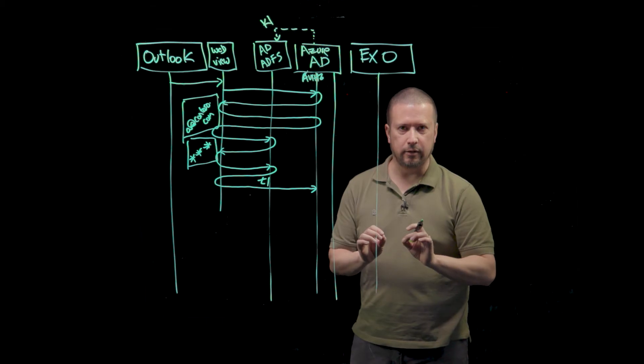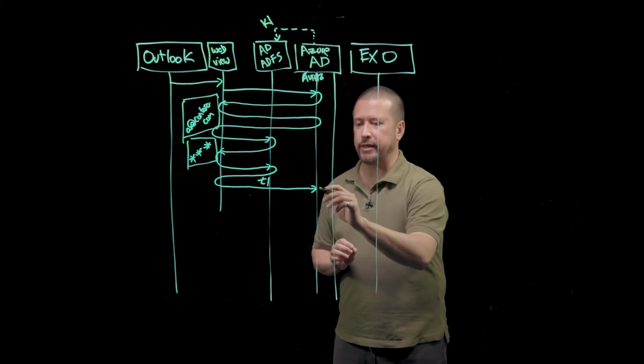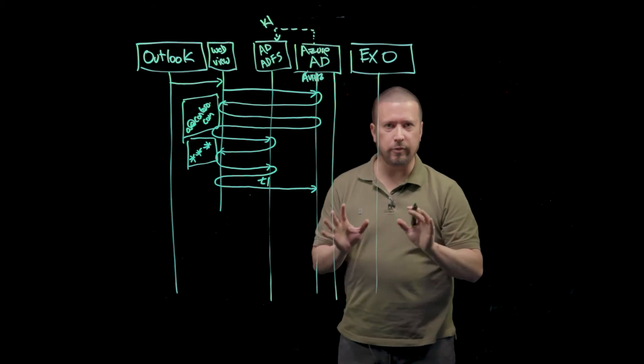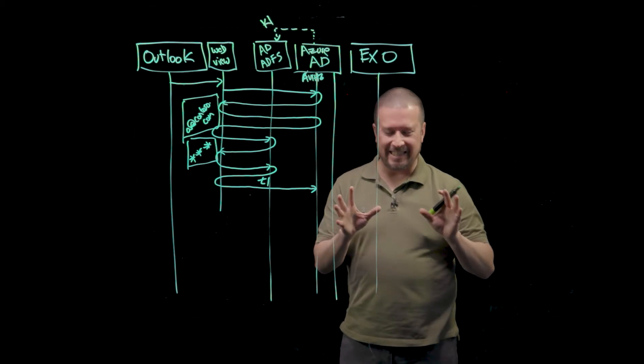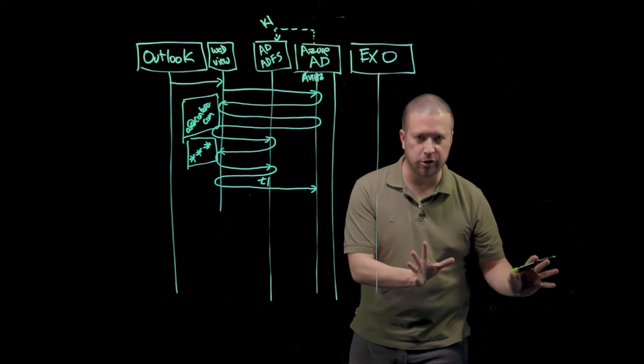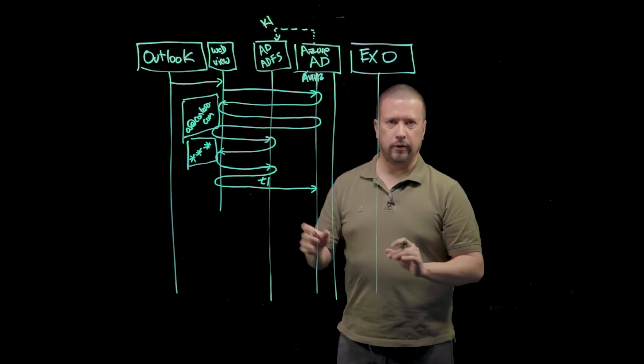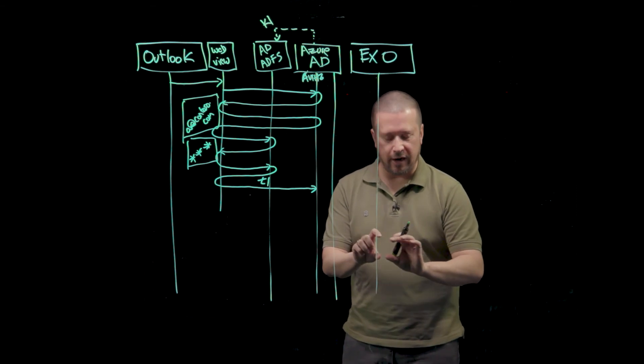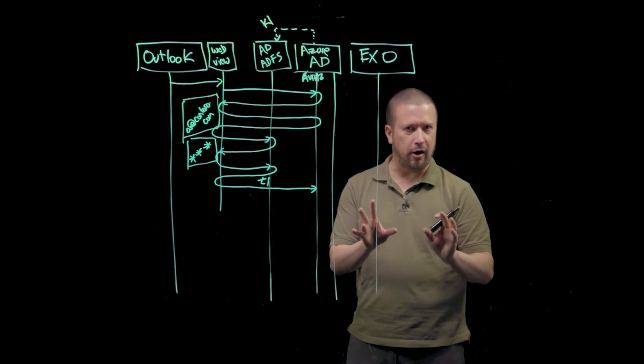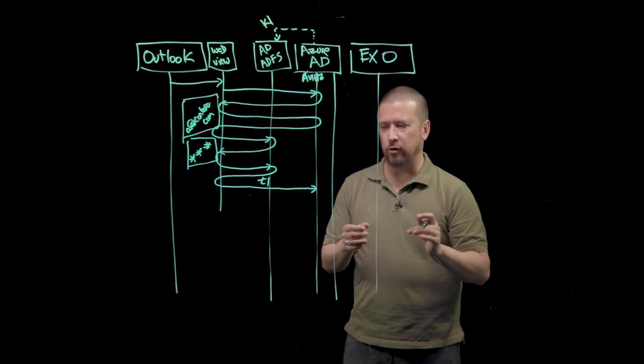then it's going to terminate this original authorization code request by sending the authorization code, which is what Outlook is going to need, through, by sending it in the query string parameter to what's called the redirect URI of Outlook. Outlook is registered with the directory, and when Outlook was registered with the directory, it said, when you need to send me authorization codes, you need to send them to this redirect URI.